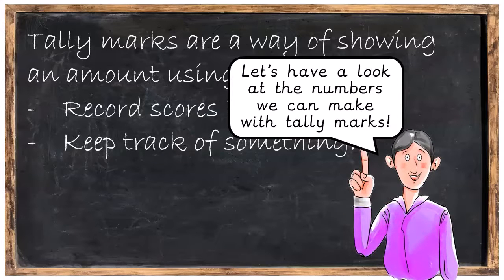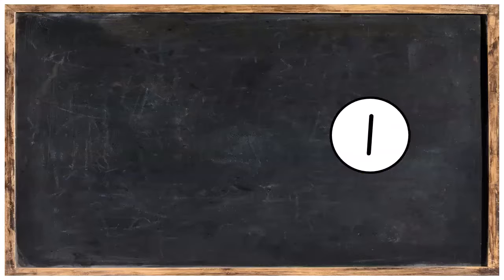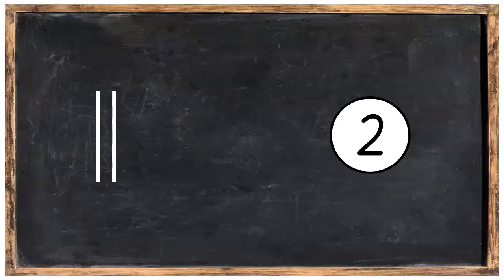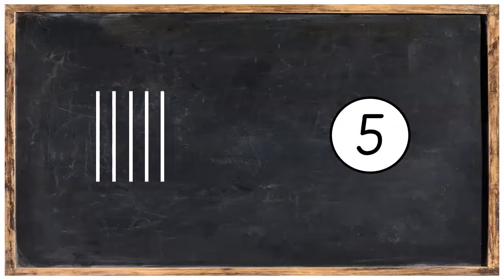Let's have a look at the numbers we can make with tally marks. One of something is represented with a single line. Then we've got 2, 3, 4. The number 5 is 5 lines, but we actually lie it down over the other 4 lines, like that.